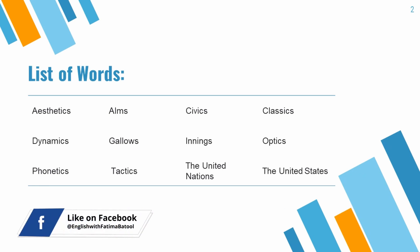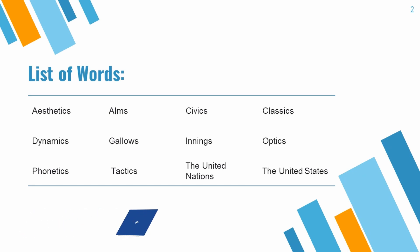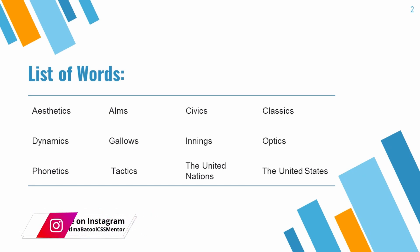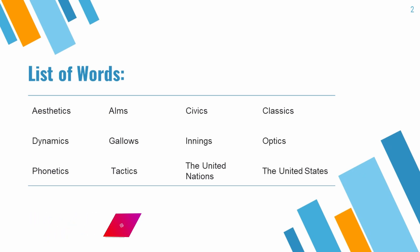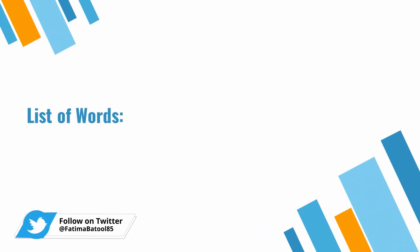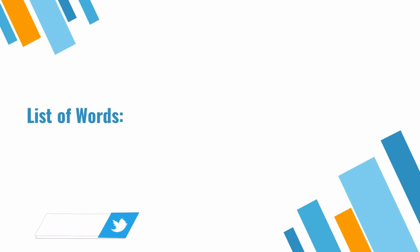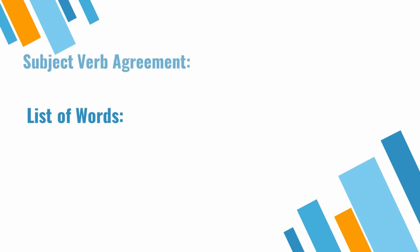Ab yahan 'all possible means have been tried' mein means ko plural ki sense mein use kiya gaya hai. Aksar writers jo hum parhte hain woh in plural forms wale alfaz ko plural ke taur par bhi use karte hain. Toh jab aap ko koi aisi exception nazar aaye toh aap maani par zaroor ghaur karein ke writer ek cheez ki baat kar raha hai ya ek se zyada ki.